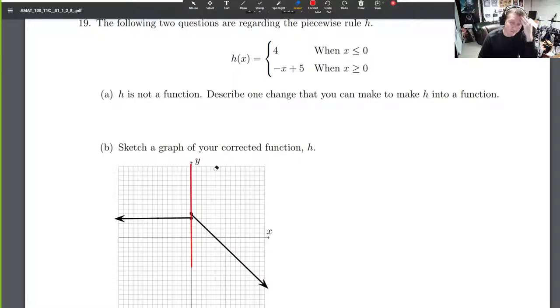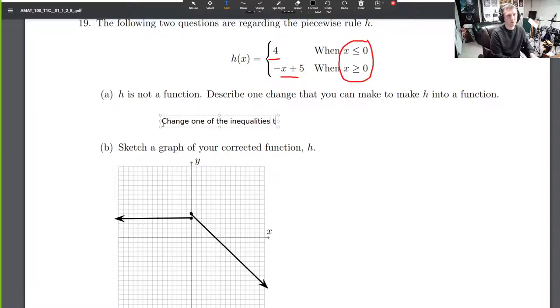That's why it's not a function. If we plug in x equals zero, we get both 4 and 5. That's not okay. So what can we do? In words: change one of the inequalities to a strict inequality.